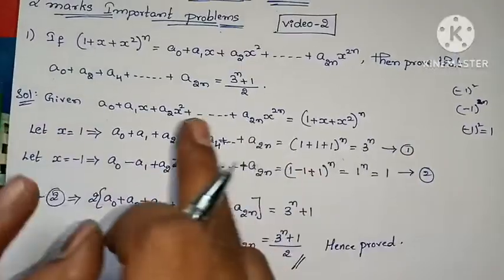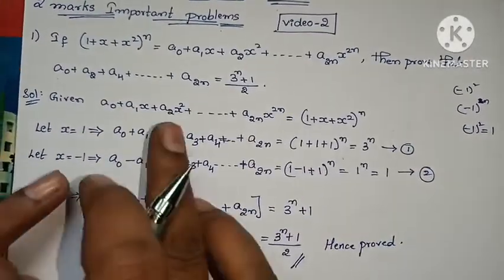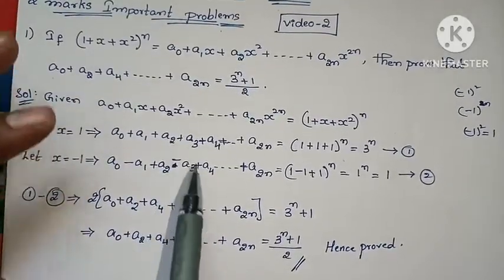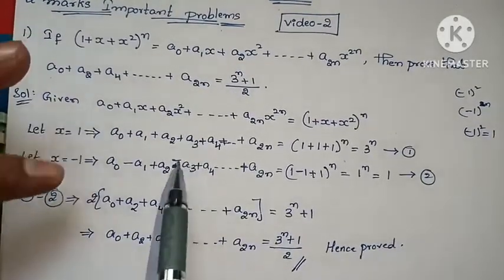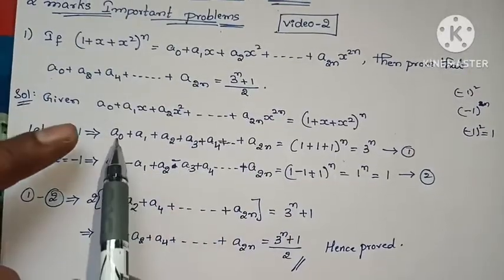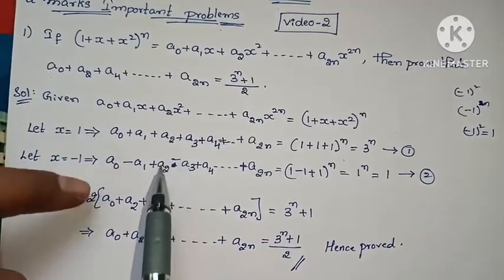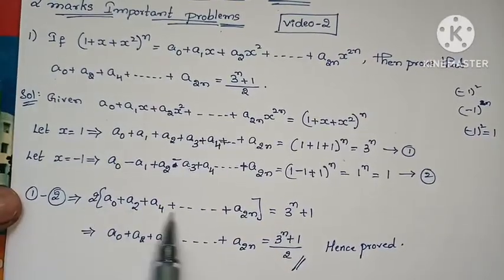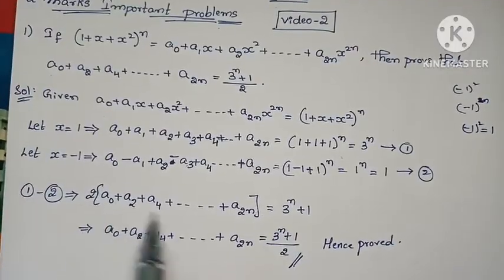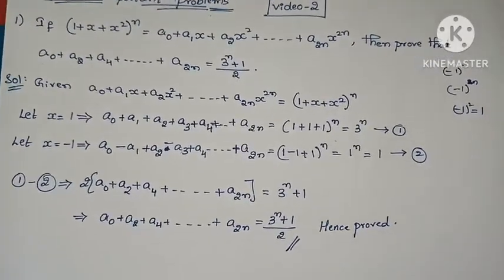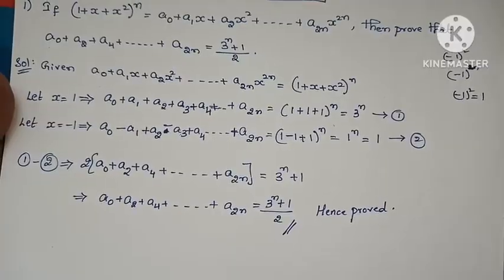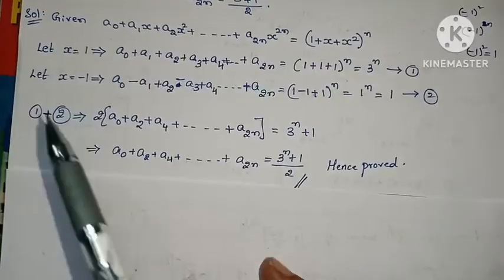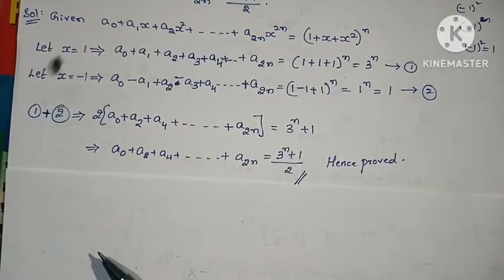Very simple! First, substitute x = 1 to get one equation. Then substitute x = −1 to get another equation. Add the two equations: a₁ − a₁ cancels, a₃ − a₃ cancels. The even-indexed terms a₀ + a₀, a₂ + a₂, a₄ + a₄ remain. Take 2 as common, divide out, and we get the required RHS of (3^n + 1)/2. That's how we prove it. Now let's look at the next problem.